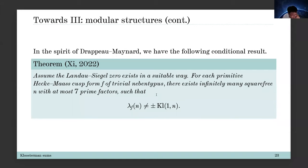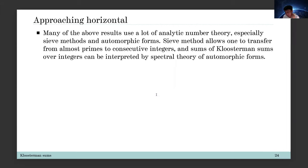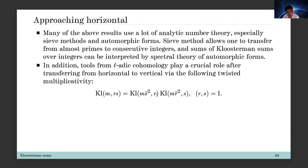We now have about half an hour to explain the ideas of the proof. Our starting point is sieve methods. Sieve methods allow us to transfer from prime to almost prime arguments. If you take the sum of Kloosterman sums after applying sieve methods, you have to study the sum of Kloosterman sums with integral moduli, which means we can apply the spectral theory of automorphic forms. We also have to study certain equidistributions of Kloosterman sums using étale cohomology.